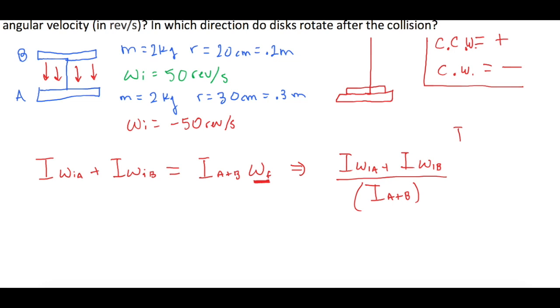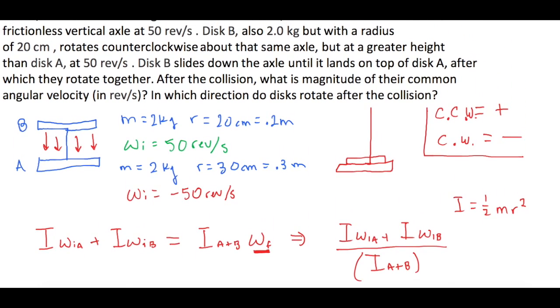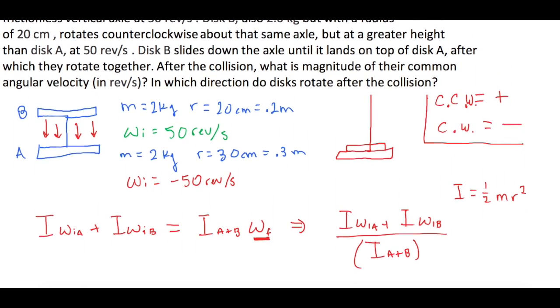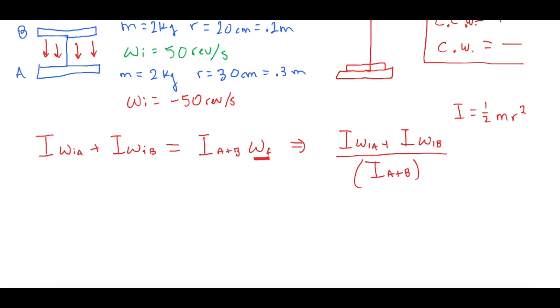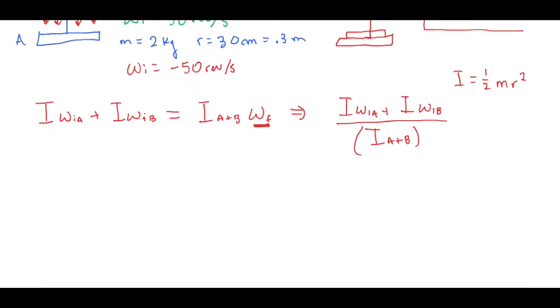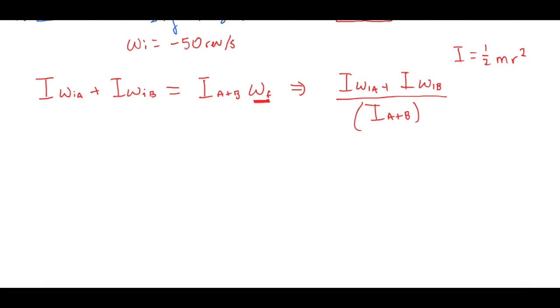Now, I that we're going to use, they're all disks, so that's all going to be 1 half MR squared. And let's see, what do they want the omega at the end in revolutions per second? Okay, so let's go ahead and leave it, and then I'll spit out revolutions per second.